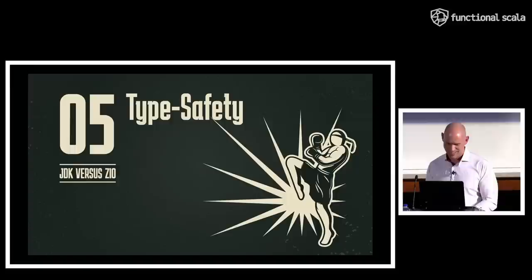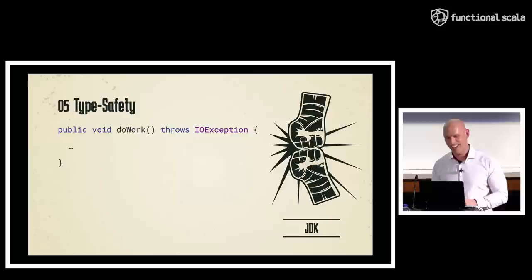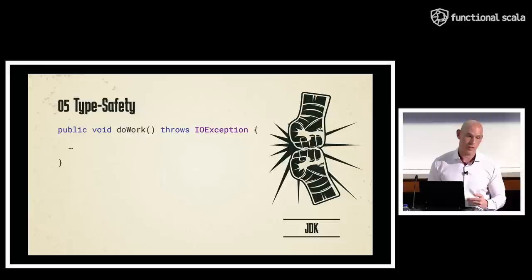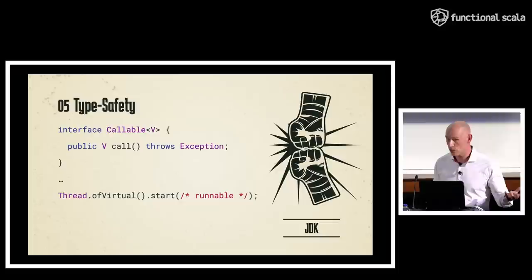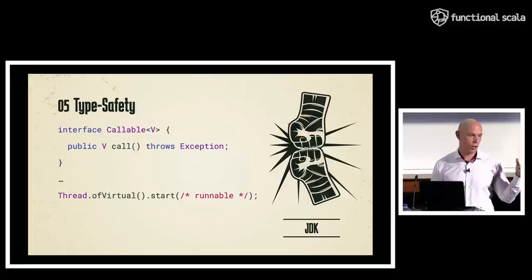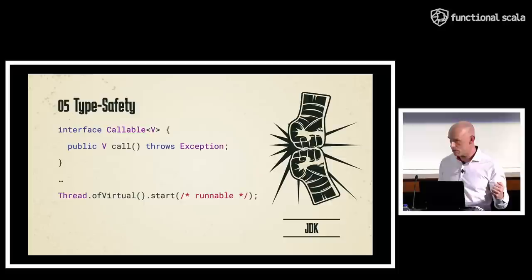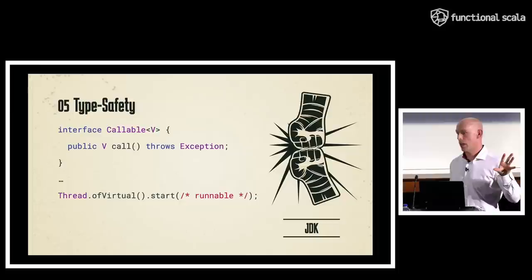Type safety. Java in the old days at least paid lip service to type safety and errors with checked exceptions. But there are serious drawbacks to checked exceptions. Callable lets you throw an exception, but it's not typed — it's just generic Exception. Looking at all the stuff in Loom, it feels like they decided checked exceptions were a failure and they're not even going to try to deal with typed errors. In Loom's structured concurrency and virtual thread API, they're moving further away from even the simple forms of exception tracking we had in earlier JDK versions.